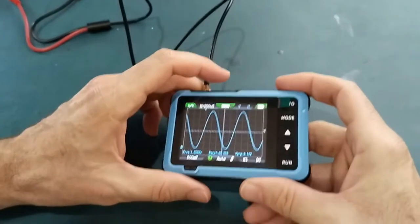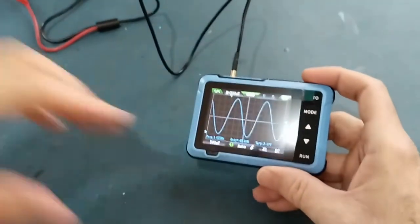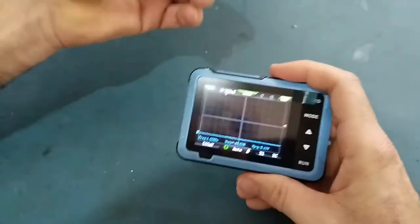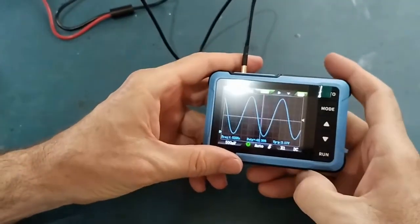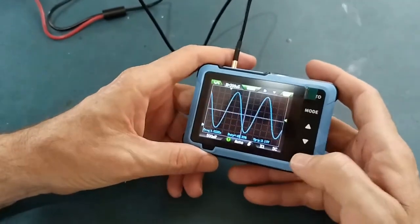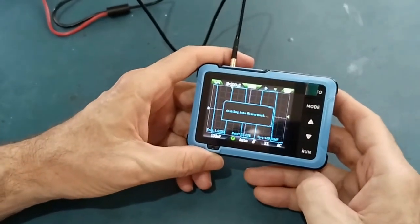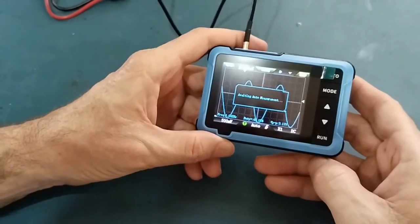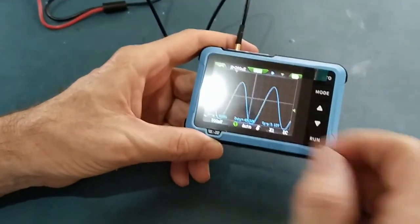There are longer videos and the user manual that demonstrate how to navigate the menu system. Here I've already connected a wave generator and I'll press auto for it to calibrate itself. Auto. There you can see, it gives me 3 volts peak to peak and 1 kilohertz.